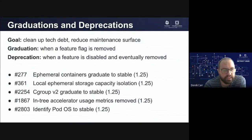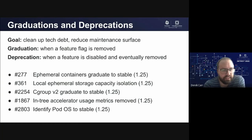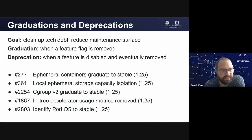In 1.25, we graduated a number of features to stable or generally available status, meaning the feature was well tested, well understood, documented, and offers a backward compatibility guarantee going forward. Two I'll highlight that are particularly interesting are those with very low issue numbers — Kubernetes has been a project for a very long time, and some features take a long time to mature. Ephemeral containers is a good example — a feature that changes the lifecycle of a pod and how we run containers in those pods — and it's great to see that go stable in 1.25, closing out issue number 277.